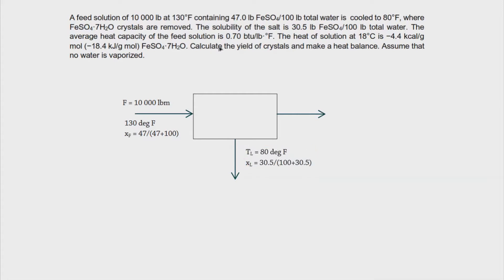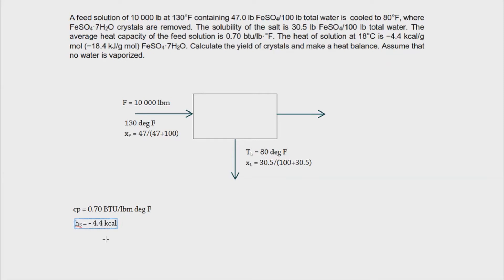The average heat capacity of the feed solution is 0.70 BTU per pound mass per degree Fahrenheit. The heat of solution is negative 4.4 kilocalories per gram mole, so H sub S equals negative 4.4 kcal/g-mol of ferrosulfate heptahydrate (FeSO4·7H2O). To convert to kilojoules that would be negative 18.4 kJ, but we'll keep it in calories to convert to English units.